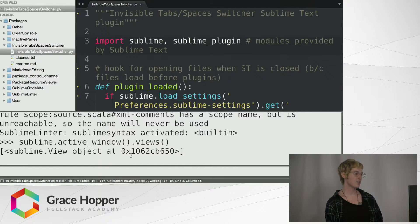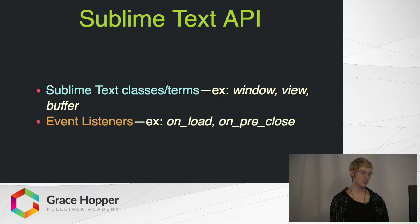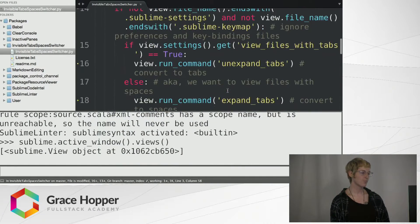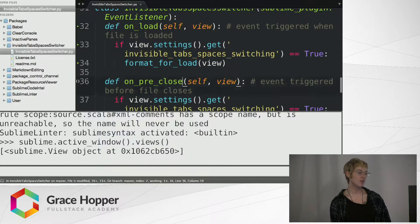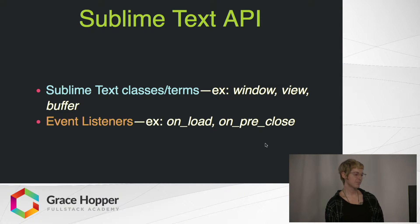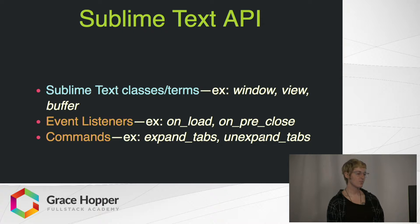Here we have an array with our view objects. The next thing to know about is event listeners. These give you ways to hook into various actions that might happen through the course of using your text editor. For this plugin, I'm using onload and onpreclose — onload will activate whenever a view loads, and onpreclose will activate right before a view closes. And then there's also commands, which are basically methods or functions. Sublime Text gives you a lot of them, and you can also use standard Python commands — in this case, expand_tabs and unexpand_tabs. Expand means converting tabs to spaces, and unexpand means putting them back as tabs.